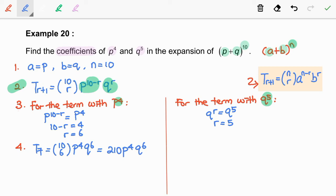Another one. For the term with q^5, we have T_6 = (10 choose 5) p^5 q^5. And this is equal to 252 p^5 q^5.